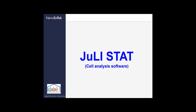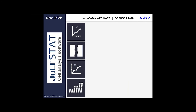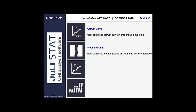Now let's move to the main topic of today's webinar — JULiStat, Cell Analysis Software, which is freely available for all users. JULiStat has four main functions. First, Automatic Growth Curve Analysis, where users can generate an automatic growth curve and obtain raw data. Second, Automatic Wound Healing Curve — you can obtain both growth and wound healing curves as well as raw data in Excel format. Third, Attached Cell Counting will give you cell counts based on your parameters in fluorescence or brightfield. And lastly, whole intensity level can be measured for Brightfield, GFP, RFP, and DAPI.